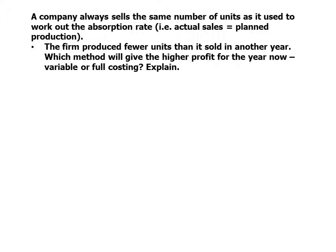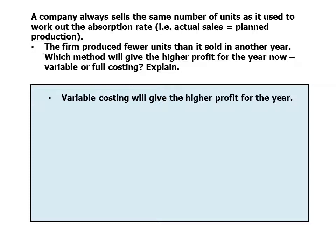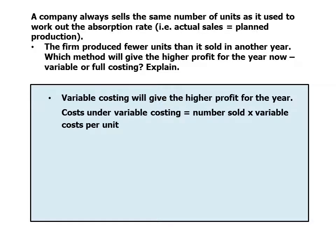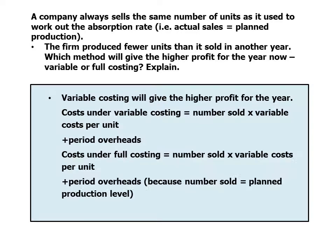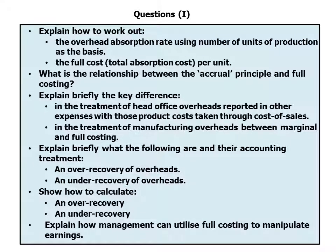Again, actual sales equals planned production. This time the firm produced fewer units than it sold in another year. Which method will give the higher profit — variable or full costing? Variable costing will give the higher profit. Under variable costing, costs are: units sold times variable cost per unit, plus the period overheads, because the number sold is equal to the planned production level. Under full costing, there is a reversal of the under-recovery, which increases costs and lowers profits. Those are the conceptual and profit-related questions covered in this quiz.